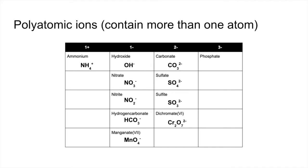And then finally, 3 minus ion we've got there is phosphate, which is PO4, 3 minus. Obviously, there are more than these polyatomic ions, but these are the most common ones that I see in A-level. So definitely worth learning these.